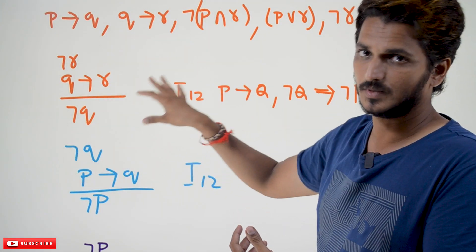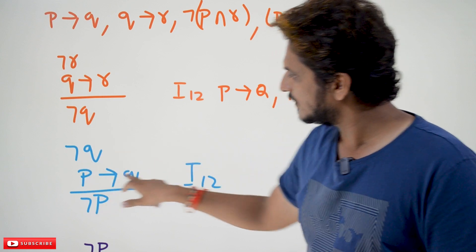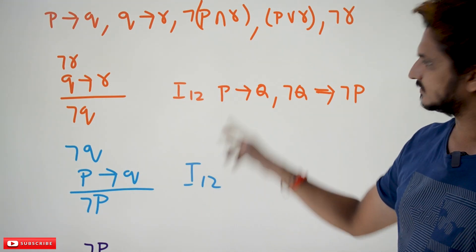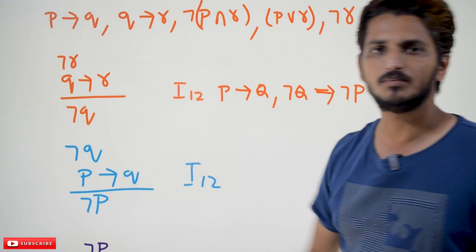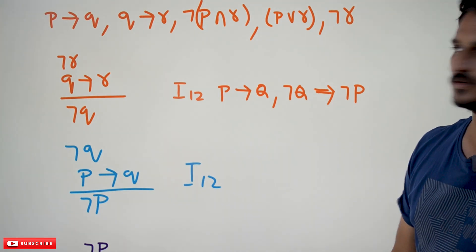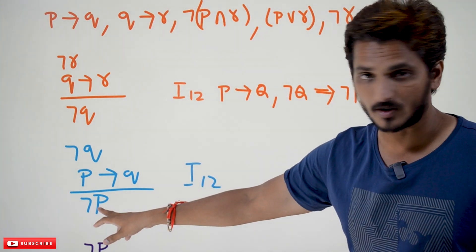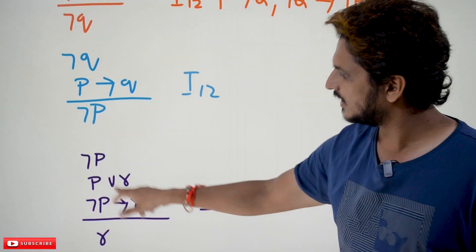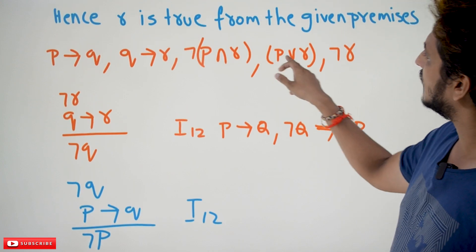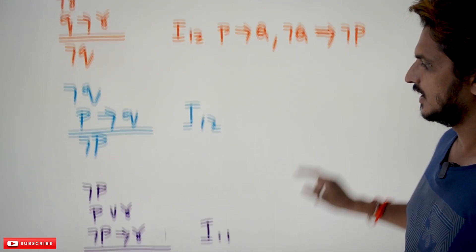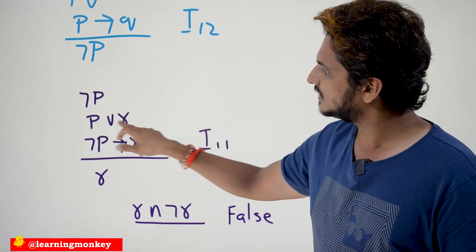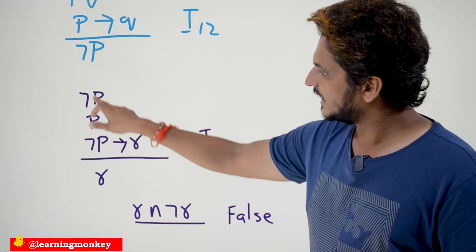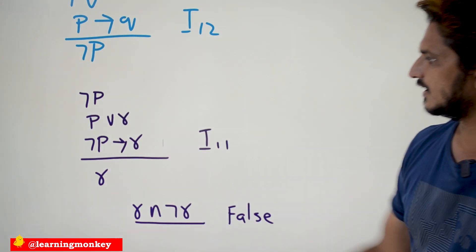We are going to use all these premises. Negation Q and P implies Q — this is the same as I12 — can be written as negation P. So from this set of premises we derived one more premise: negation P. Using this negation P, and in the set of premises we are having P disjunction R. So negation P and P disjunction R — P disjunction R can be written as negation P implies R. So negation P and negation P implies R can be written as R.